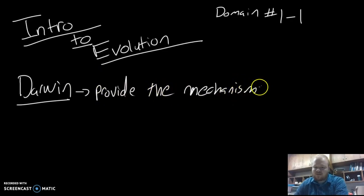All Darwin did was provide a mechanism for evolution that actually works. When we think about the mechanism of evolution, we've had different scientists propose different theories leading up to Charles Darwin.